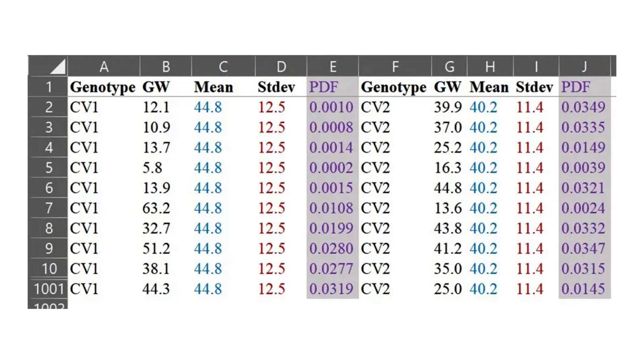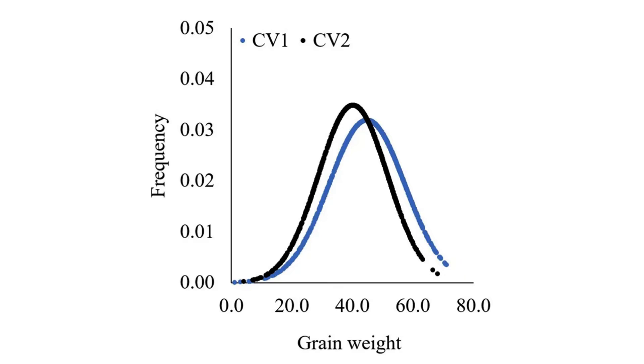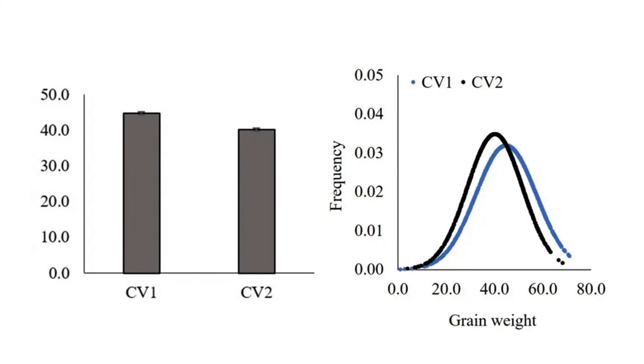As the same process, we can calculate PDF about CV2 and let's compare two graphs. With the same data, we drew two different graphs. Both graphs show the mean of grain weight, but the distribution graph will tell us more. It tells us how grain weight in CV1 is greater than CV2. In CV1, both small and large grains are greater than in CV2.